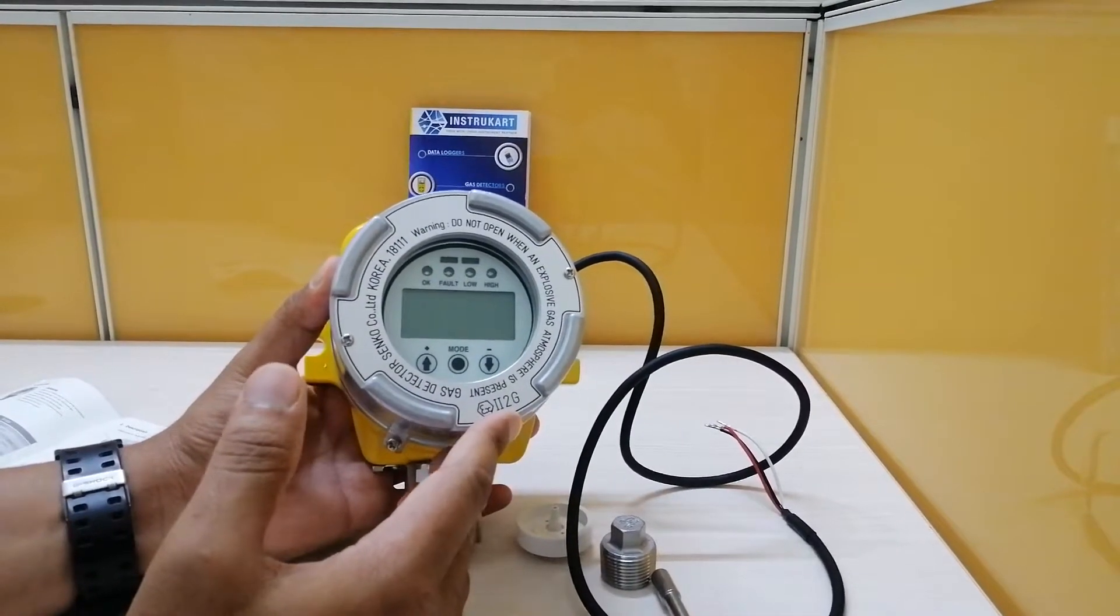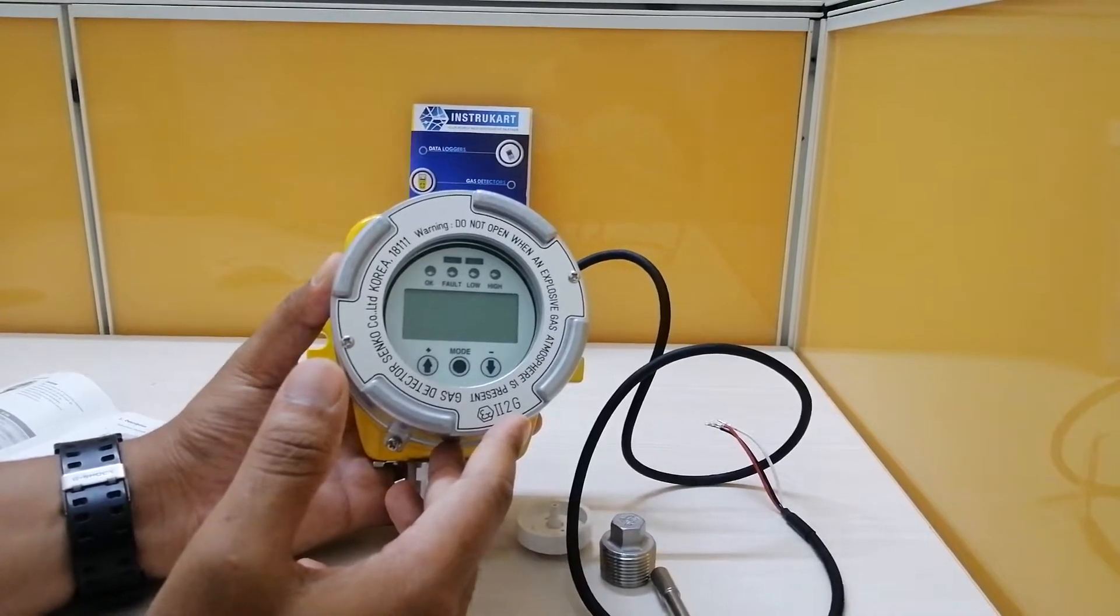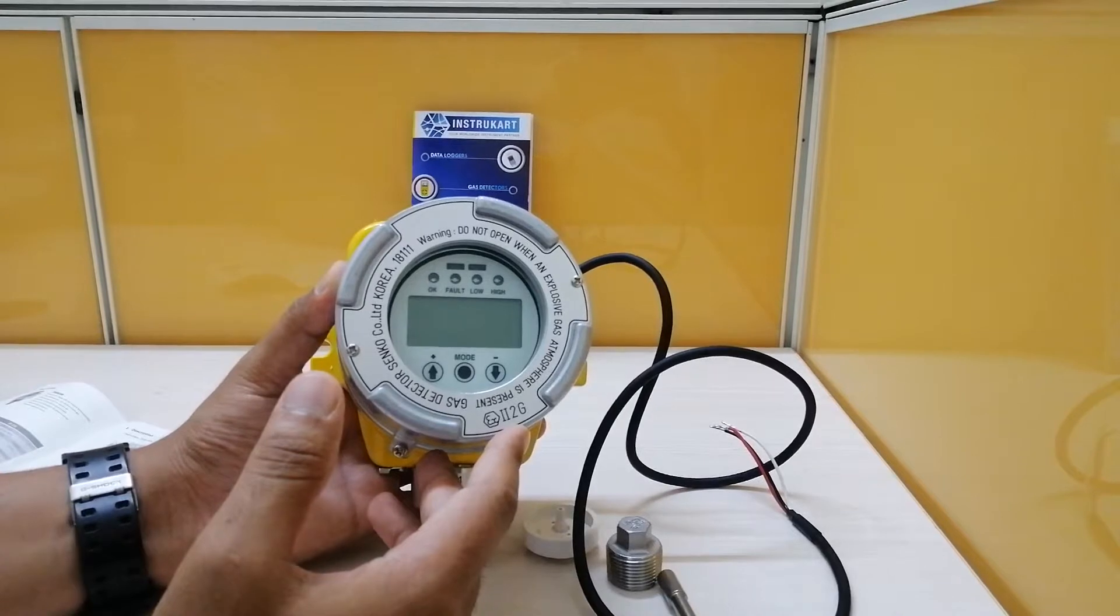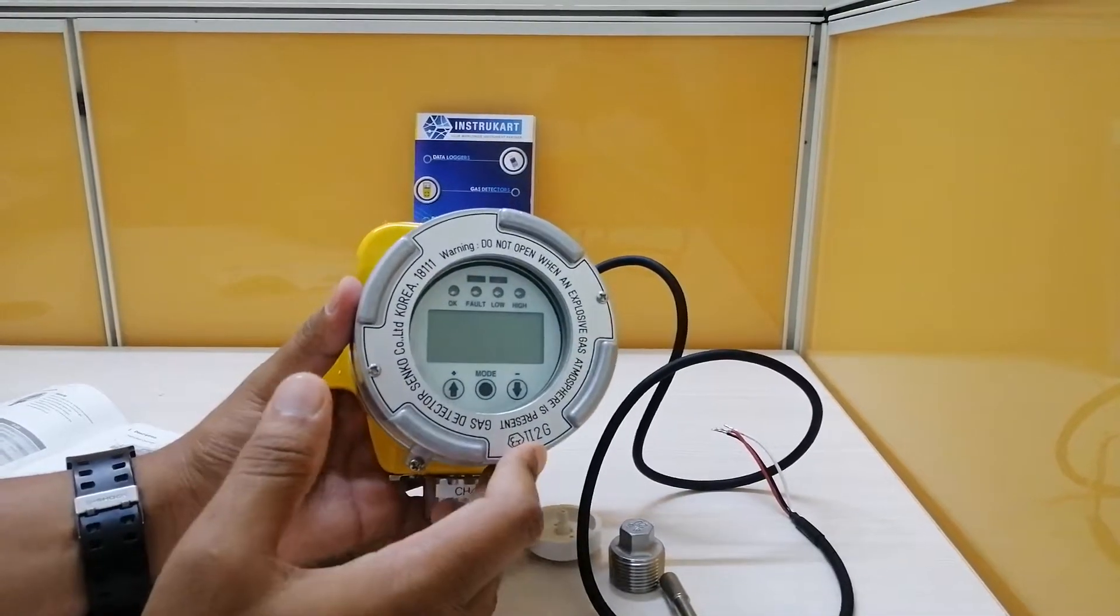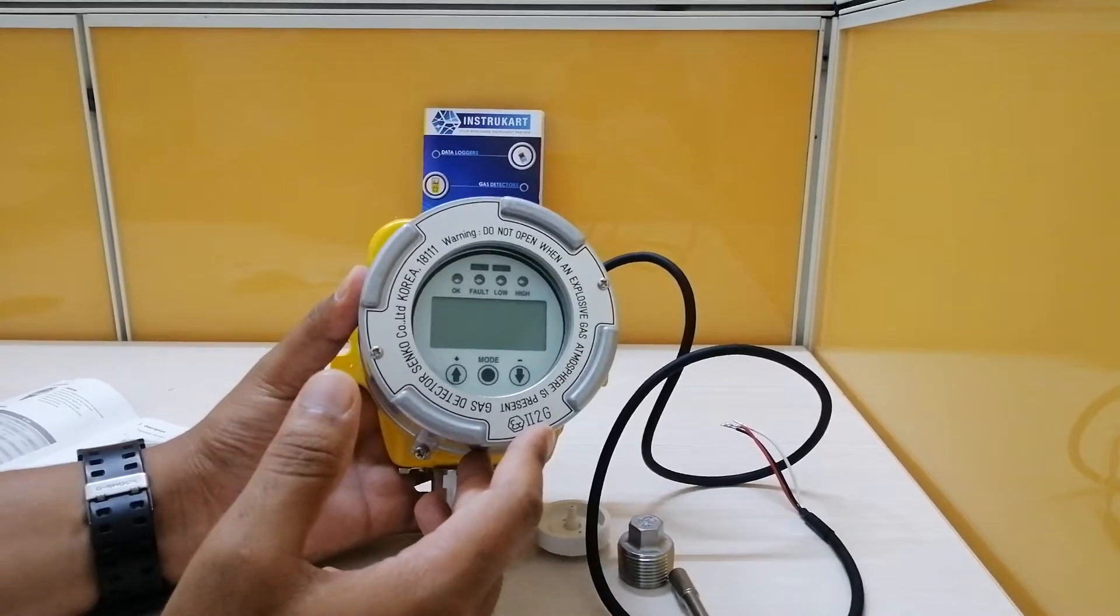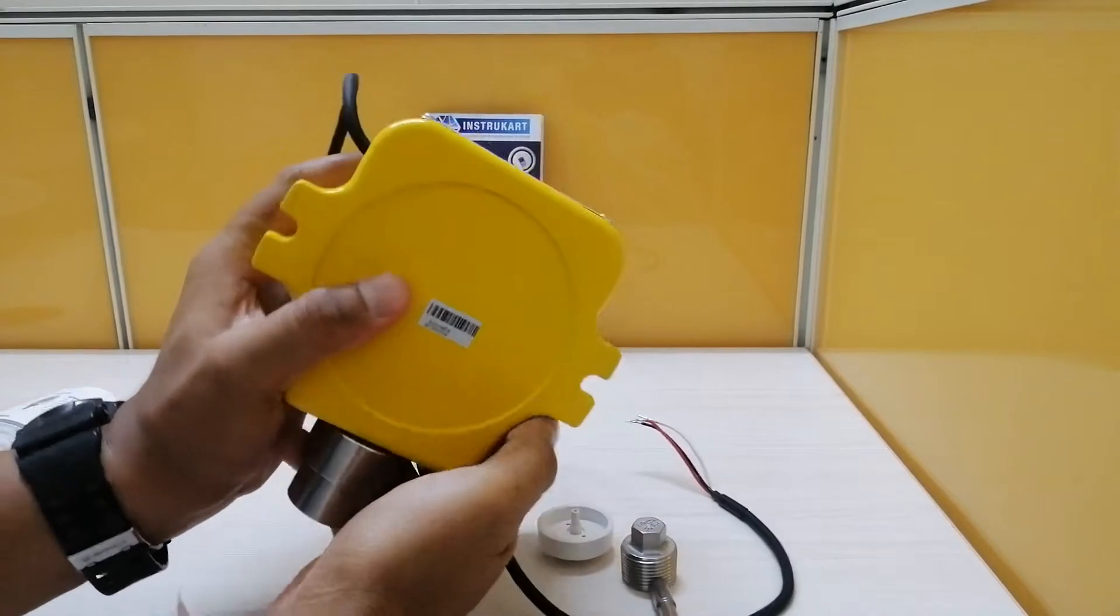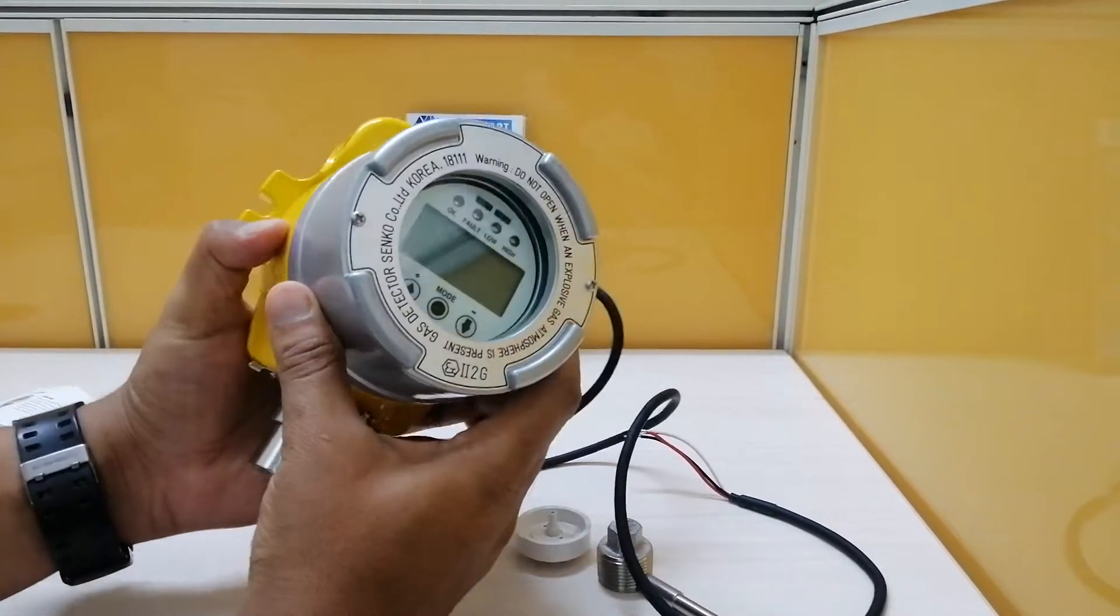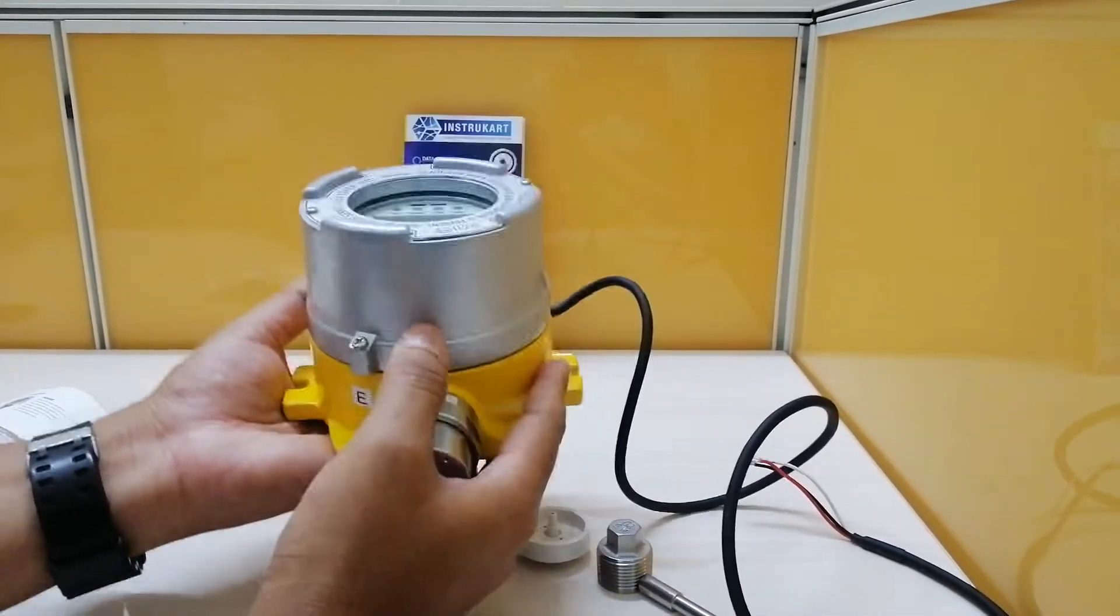This has an operating humidity of 5 to 95% RH and temperature range of minus 22 to plus 50 degrees Celsius. The operating power for this device is 10 to 30 volts DC. The dimensions are 150 by 165 by 110 mm with a gross weight of 1.8 kg.